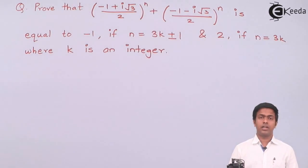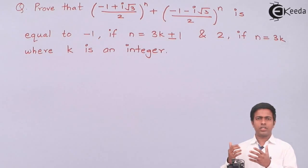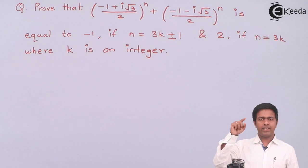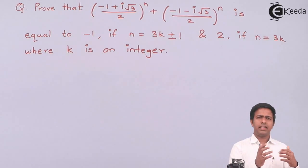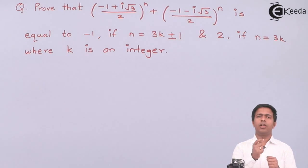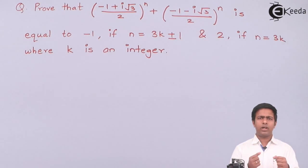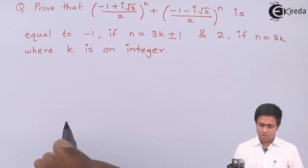We can see that power n is written outside the bracket and inside the bracket there is a complex number, which clearly shows we have to use De Moivre's theorem. De Moivre's theorem lets us find the power of a complex number. However, to apply it, the number must be in polar form — and here it's in Cartesian form, so let's convert it.